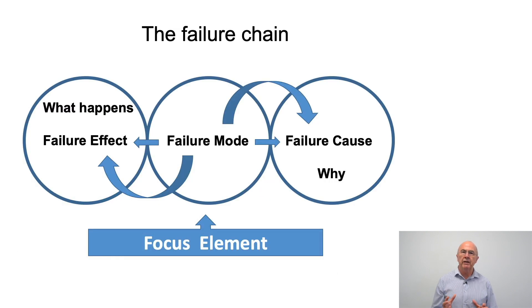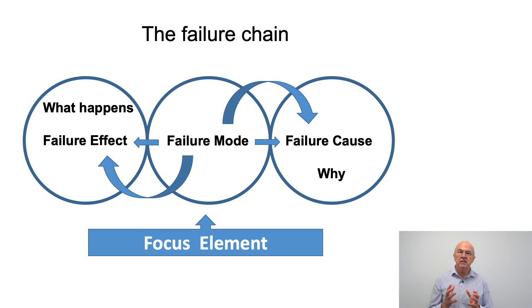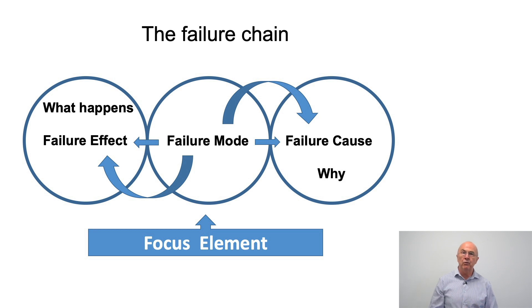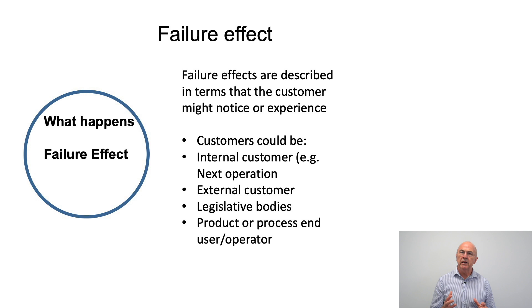In the previous slide I used the term 'the failure chain.' Those of you who have been involved in FMEA before will probably already have a good understanding of this. We start off with the potential failure mode — this is the focus element. We then think about the failure effect, what happens. Then we think about the potential failure causes, which is why the failure mode could happen. Let's look in a little more detail at the failure effect.